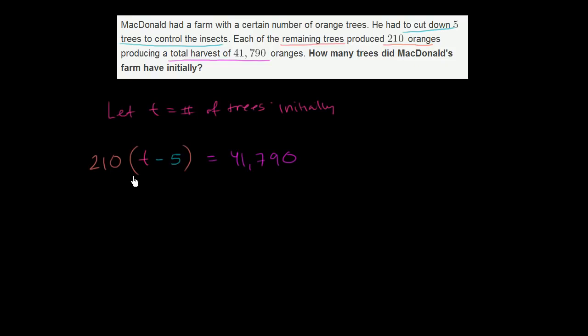So we've set up our equation. Now we just have to solve for t, the number of trees that McDonald initially had. So the first thing I would do here is, well, I'm multiplying this expression by 210. Why don't I just divide both sides of this by 210?